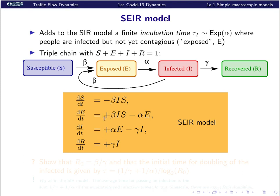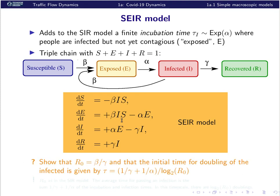Can we deduce some dynamic properties of this SEIR model? The first question concerns the reproduction number at the initial time - how many persons does an infected person infect on average at the initial stage where everybody is susceptible. The solution is the same as in the SIR model: R0 equals the infection rate beta multiplied by the average time in the contagious stage, which is 1/gamma. So R0 = beta/gamma, just as in the SIR model.